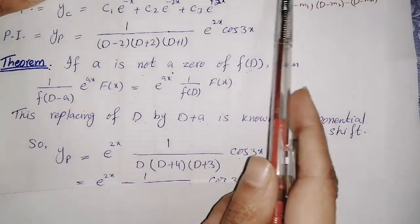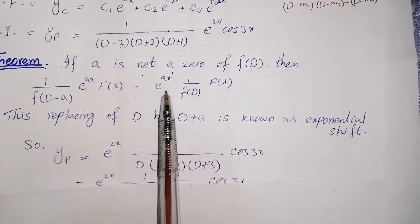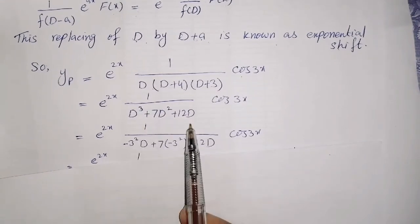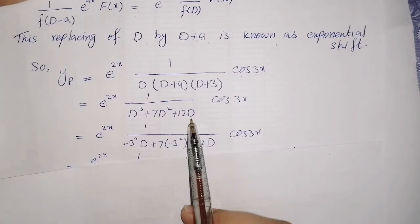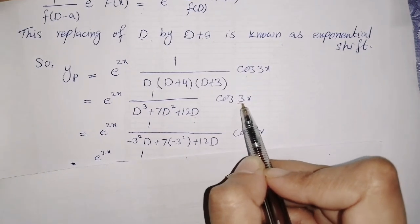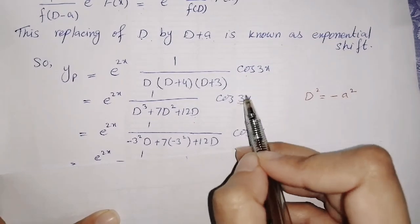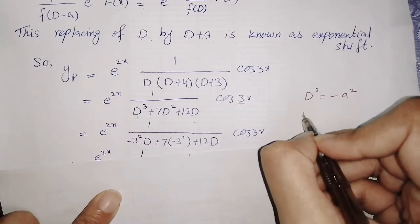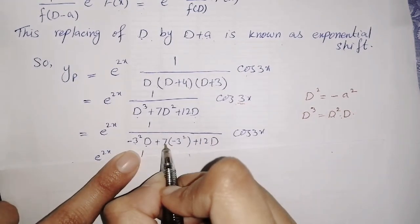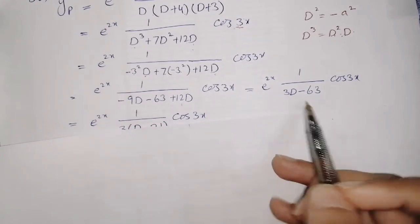So when an exponential term is multiplied by cos, and 'a' is not zero of f(D − a), write the exponential first and replace D with D + a. After simplifying and multiplying the three bracket terms, we get a combined expression. Now for cos 3x: the coefficient of x is 3, so D² = −(3²) = −9. Since D³ = D² · D, substitute −9 for D² and keep D as it is. After substituting and simplifying, take 3 common to get the next expression.